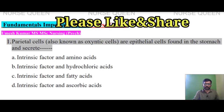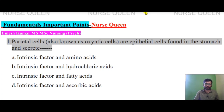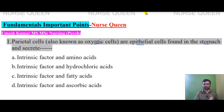The question is why is intrinsic factor secreted? Intrinsic factor is secreted by parietal cells. Parietal cells, also called Oxyntic cells, are epithelial cells found in the stomach. Parietal cells secrete intrinsic factor and hydrochloric acid.